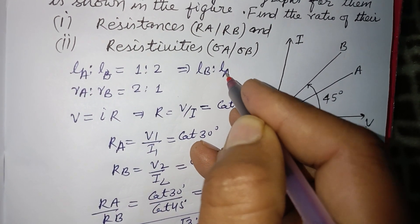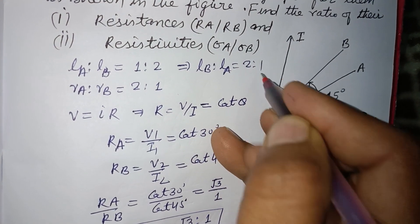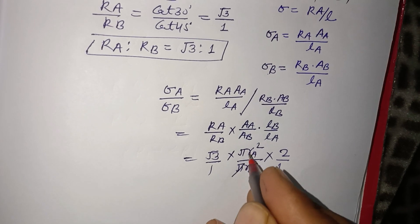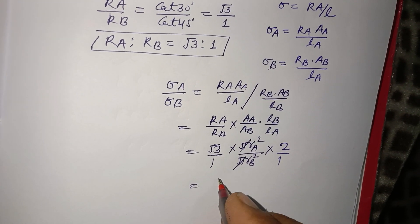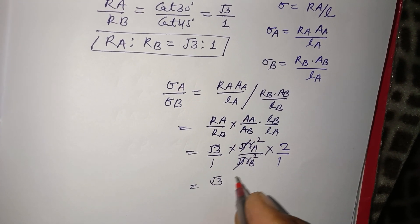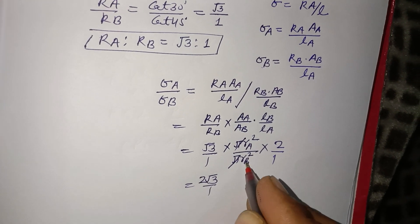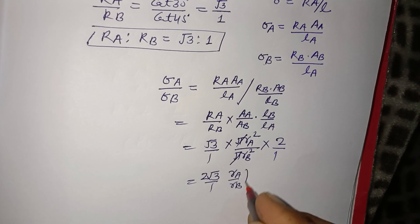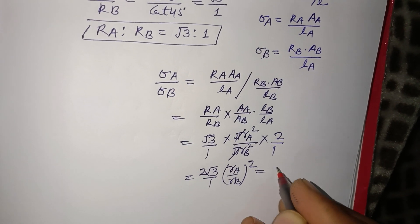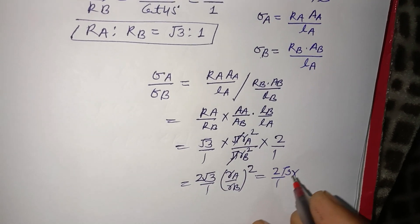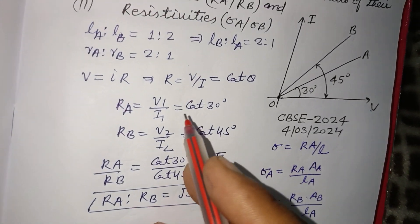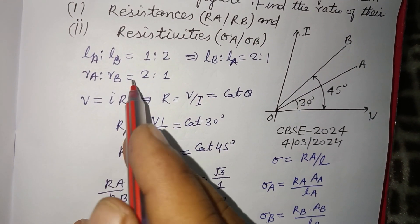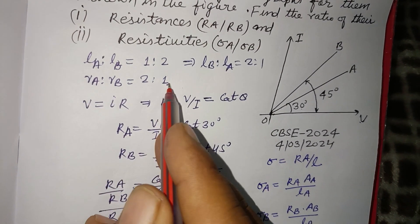Putting 2/1 here, π cancels, and we get √3 times 2/1. Here RA/RB is also given, which is 2/1, so this is (2/1)² = 4/1.